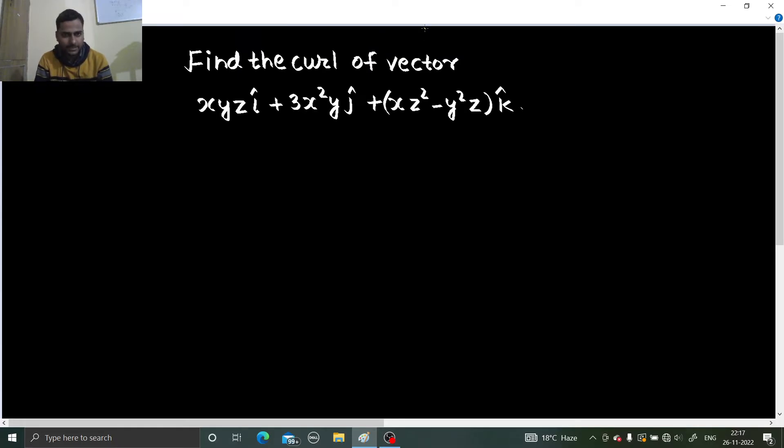Let's start with finding the curl of the vector. How do we find the curl of a vector? It's easy. If we denote this vector as vector R, we will find del cross R, which is also called curl of a vector.